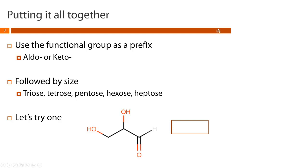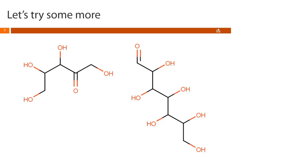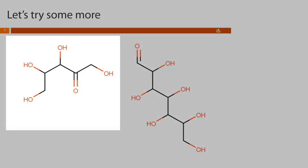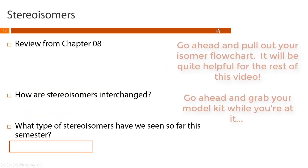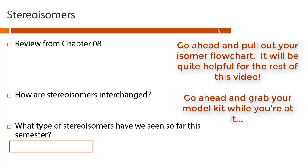The functional group shown is an aldehyde and there are three carbon atoms, so this molecule would be an aldotriose. For the next two examples: the one on the left has a ketone and five carbons — a ketopentose. The one on the right has an aldehyde and seven carbons — an aldoheptose.